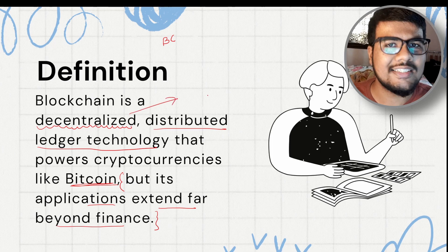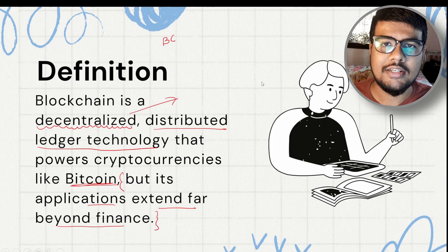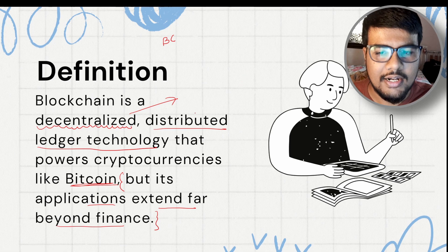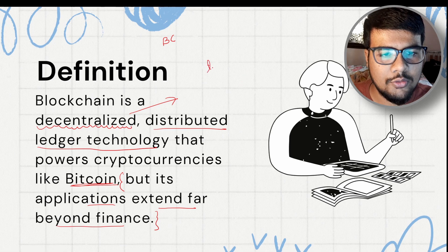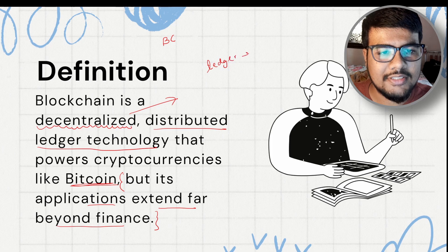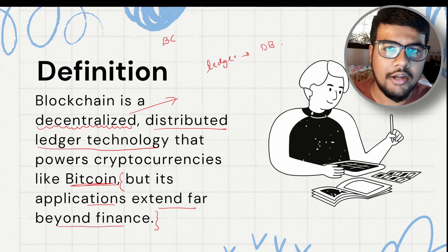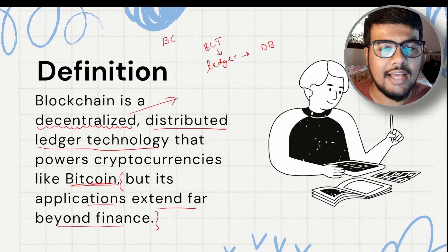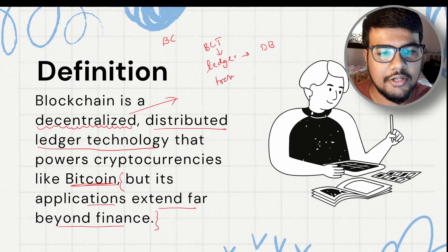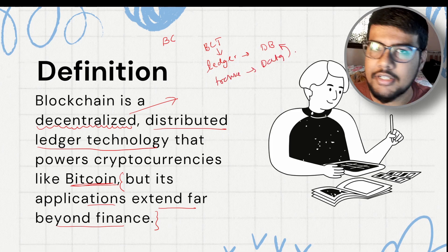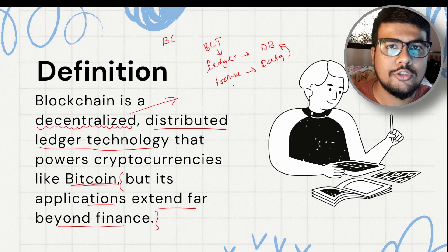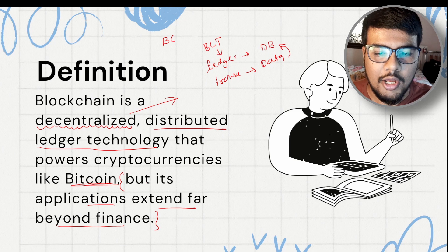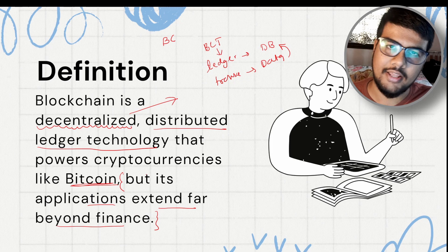Decentralized means there is no central control — everyone in the network can communicate with each other. Ledger is basically a database, like MongoDB or a SQL database, but in the blockchain industry we call it a ledger. Transaction denotes data, so data is stored in the database. In layman's terms: transactions are stored in the ledger.